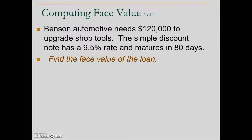Let's look at another example. Benson Automotive needs $120,000 to upgrade shop tools. The discount note has a 9.5% rate and matures in 80 days. They're asking us to find the face value of the loan. Because this is a discount note and they need $120,000, this amount is acting as our proceeds. We're going to have to ask for a larger amount because the bank discount is subtracted from that amount, and Benson Automotive needs the full $120,000.